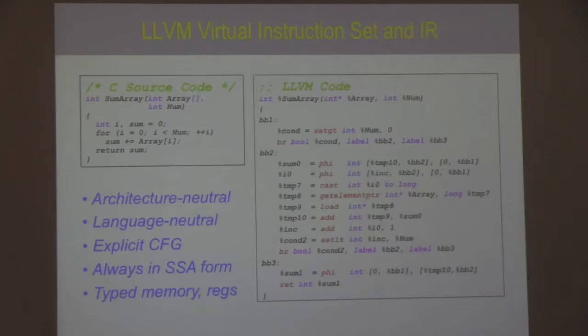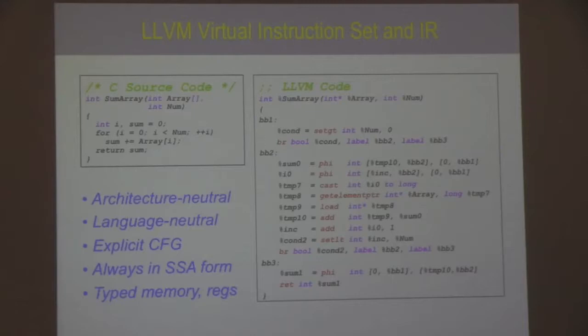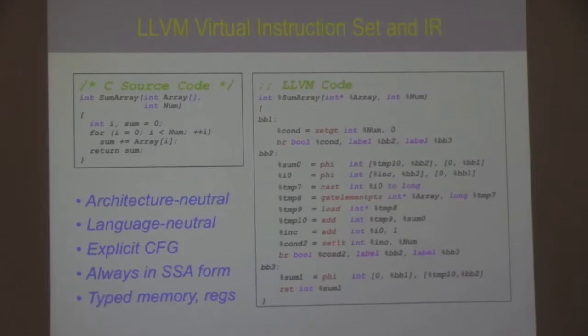Second, LLVM is always in static single assignment form — SSA — a data flow representation that makes compiler data analysis and optimizations simpler. The phi instruction in LLVM is the traditional phi operation of classical SSA form, which allows you to directly do data flow analyses on the LLVM representation. All memory operations and register operations are typed, so you have enough type information to do sophisticated analysis.